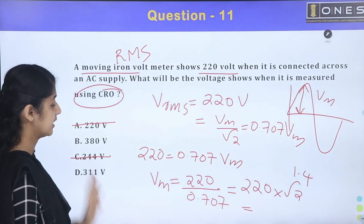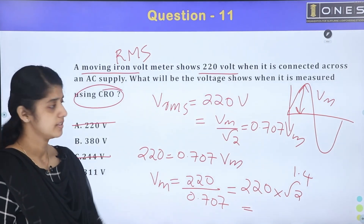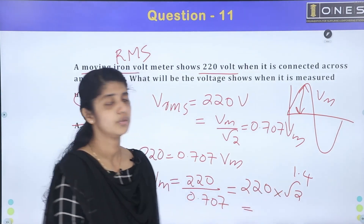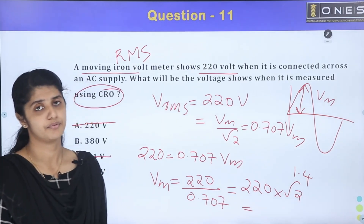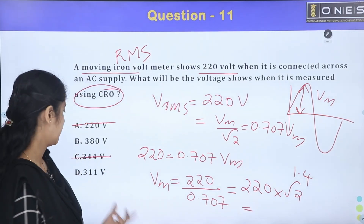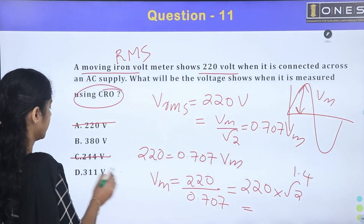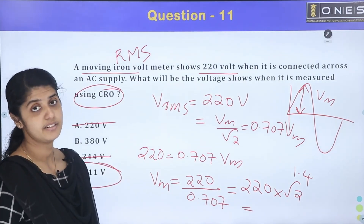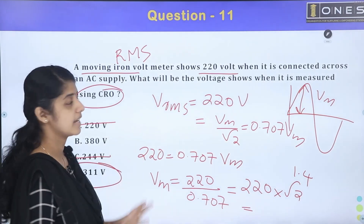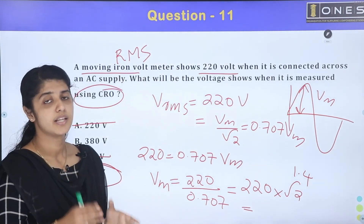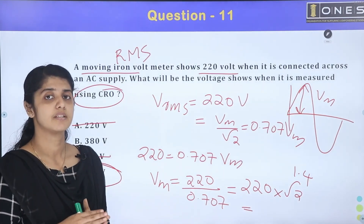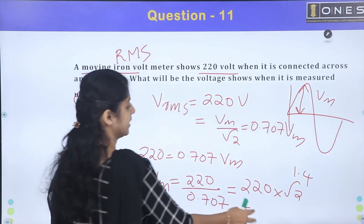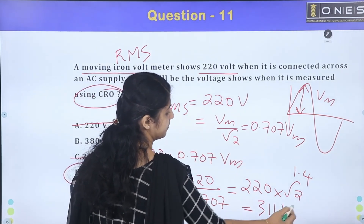220 into 1.414 equals 311. The peak value shown on the CRO is 311 volts.